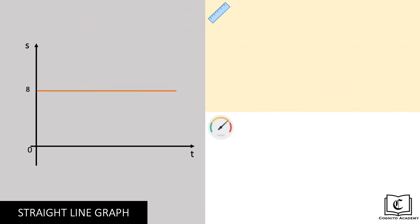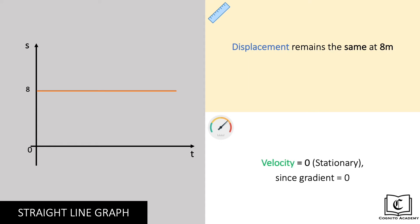Next, in this graph, we see that this object's displacement remains the same at 8 meters for the entire duration. There is no velocity on this object as the gradient is 0, meaning that the object is stationary.